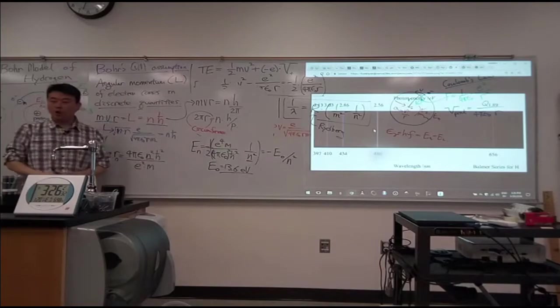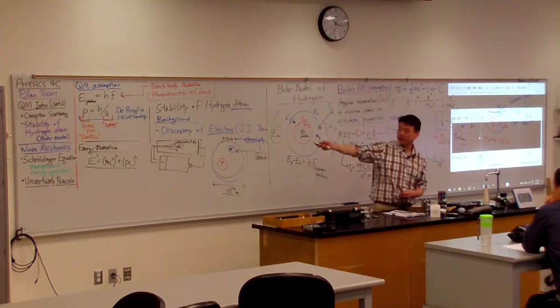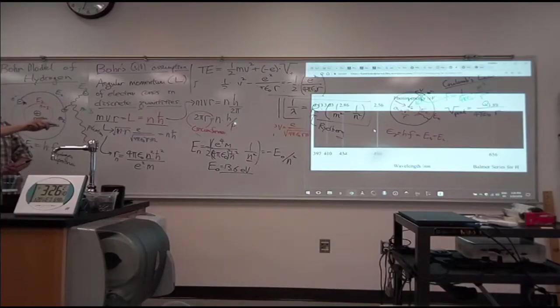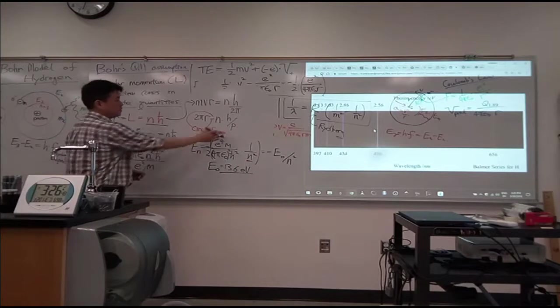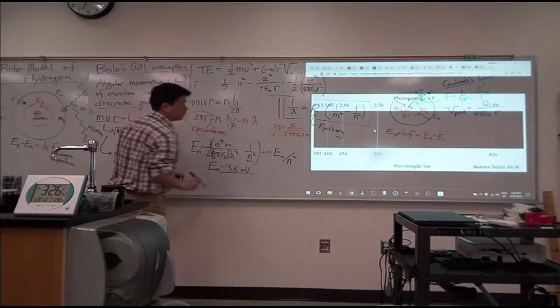Now, if you happen to be aware of the other crazy assumption that de Broglie was making, what can you say about this ratio, h over momentum? That's the wavelength, right? So you could say, well, the right-hand side is n times the wavelength of the electron.